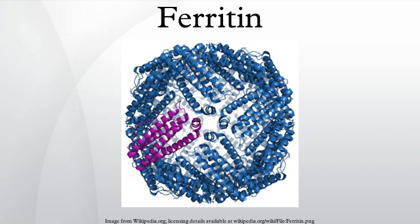Cavities formed by ferritin and mini-ferritin proteins have been successfully used as reaction chambers for the fabrication of metal nanoparticles. Protein shells serve as a template to restrain particle growth and as a coating to prevent coagulation and aggregation between nanoparticles. Using various sizes of protein shells, various sizes of nanoparticles can be easily synthesized for chemical, physical, and biomedical applications.